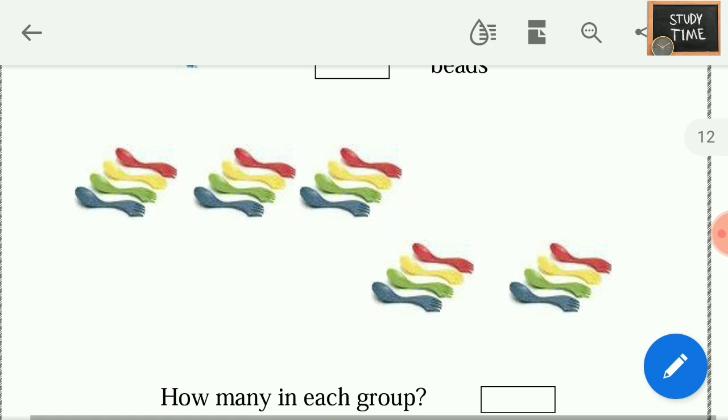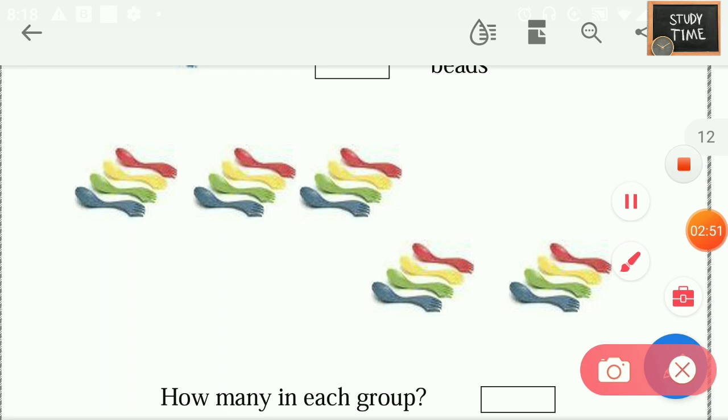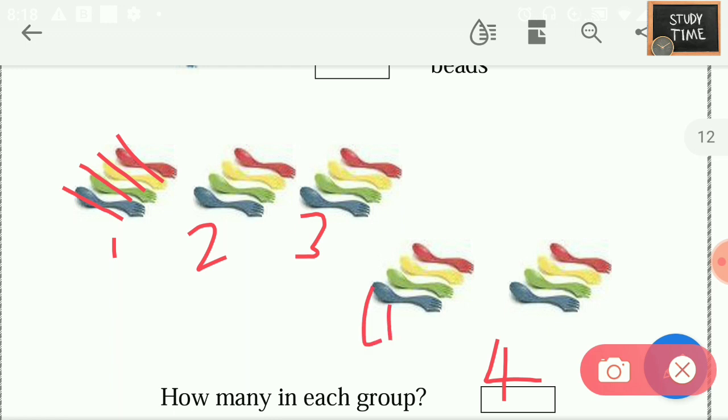Next, how many in each group? They are asking how many in each group. So each group has 1, 2, 3, 4. Each group has 4 forks. If they ask how many groups are there, you have to write 1, 2, 3, 4, 5. So how many in each group? You have to read the question properly.